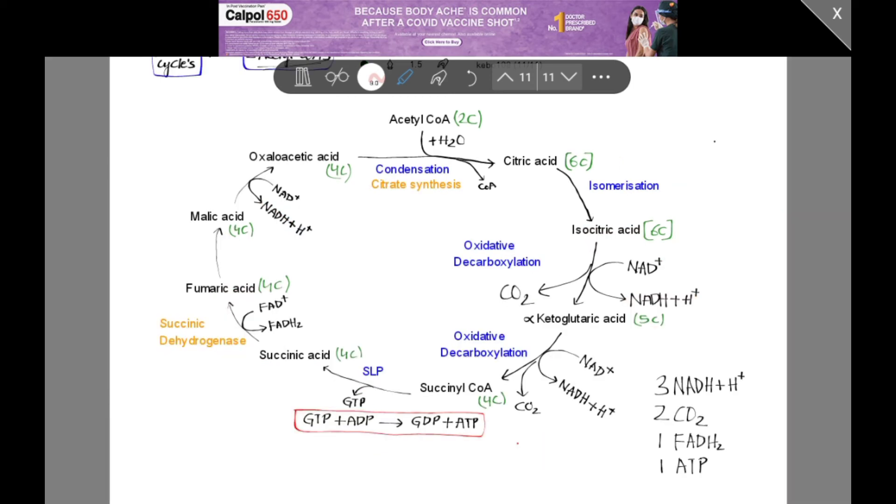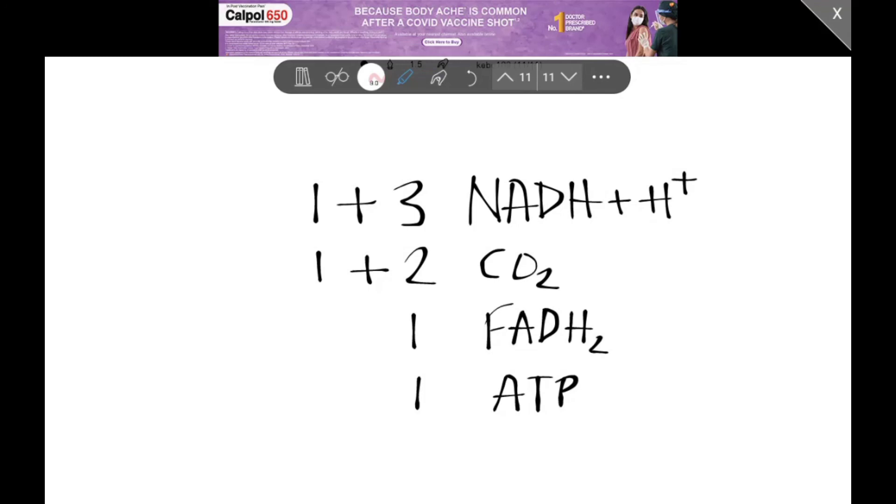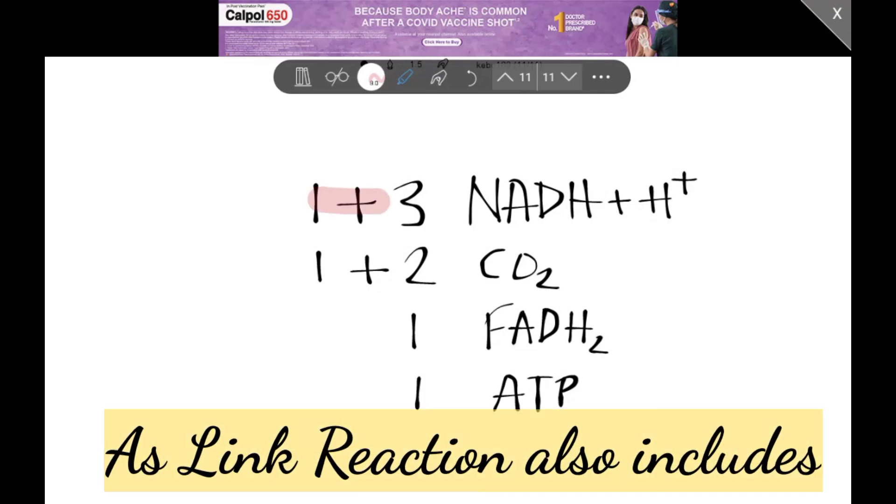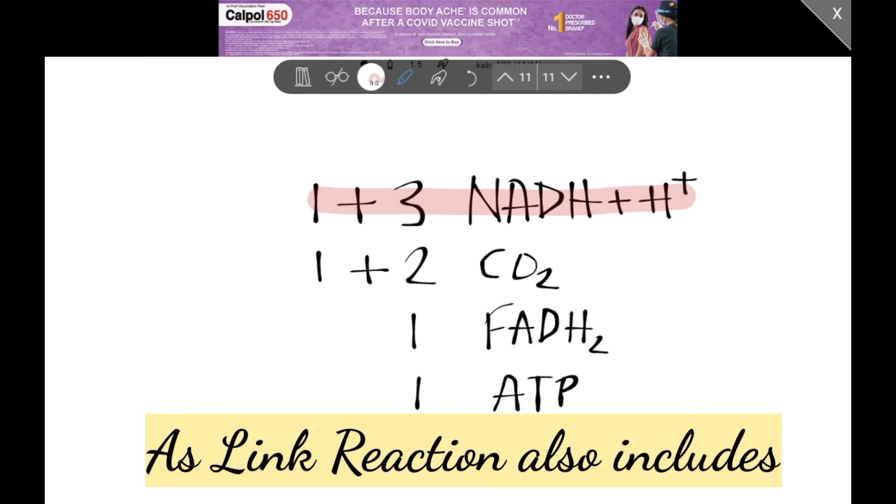Till now, I explained one round of Krebs cycle. In one round of Krebs cycle, the products are 3 NADH + H⁺, 2 CO₂, 1 FADH₂, 1 ATP. If they ask for 2 rounds of Krebs cycle, 6 NADH + H⁺, 4 CO₂, 2 FADH₂, 2 ATP. If they ask from 1 pyruvic acid, 4 NADH + H⁺, 3 CO₂, 1 FADH₂, 1 ATP.